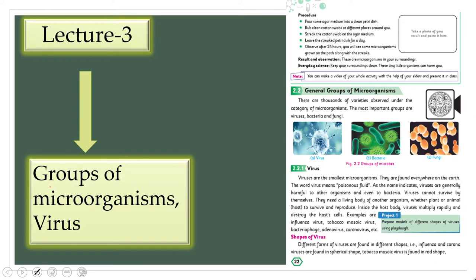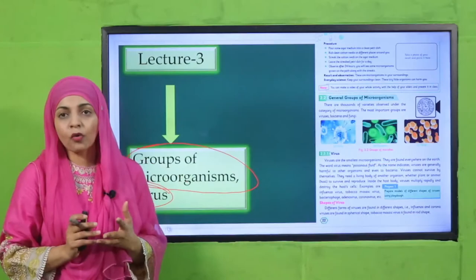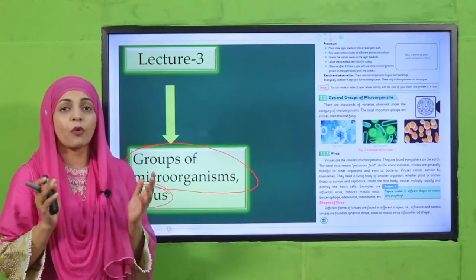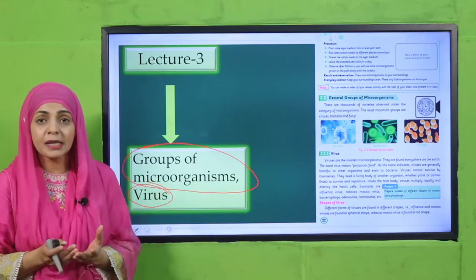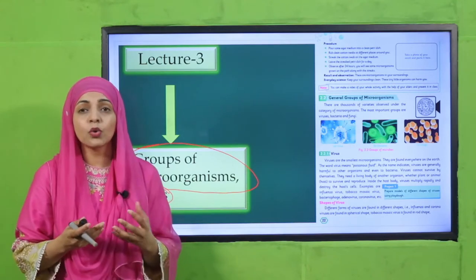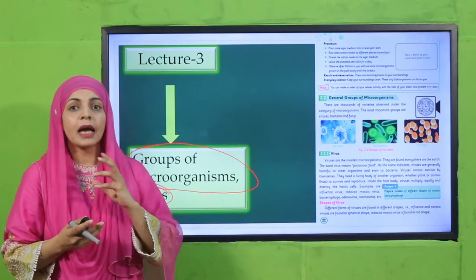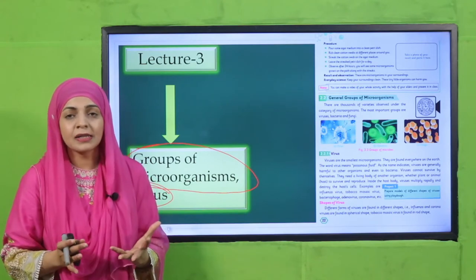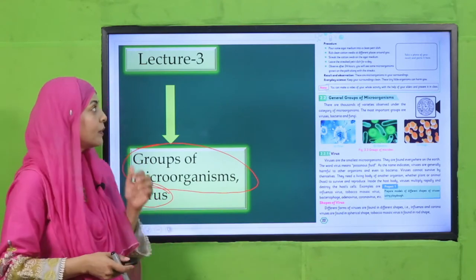In lecture number three, groups of microorganisms will be discussed, and we will discuss viruses first — kitne groups of microorganisms ke — we will discuss virus: whether it is a microorganism, where it is found, what its shapes are, and what the different types of viruses are. This will be discussed in lecture number three.